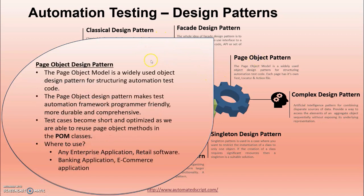The page object model design pattern is widely used for structuring automation test code. With this pattern you design a page object class according to a particular screen you wish to automate. For example, for the Facebook login screen you create a login locator file, a login action file, a login verification file, and a login test class. You put all the UI element locators as variables in the login locator class, all actions on top of those locators in the login action file, and verifications in the login verification class. Every login test class will extend the base class where the WebDriver initializer class is called.